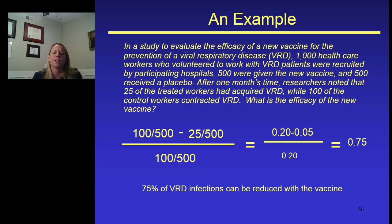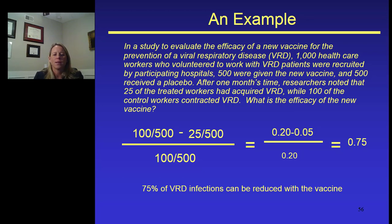You're asked to calculate the efficacy of this new vaccine, and in this instance we may be interested in calculating the relative risk reduction. When we plug in the numbers, we get a relative risk reduction of 0.75 or 75%, interpreted as: 75% of viral respiratory disease infections can be reduced with this new vaccine compared to a placebo vaccine — a fairly large reduction.